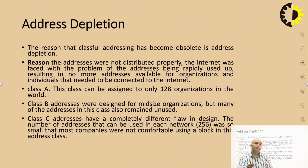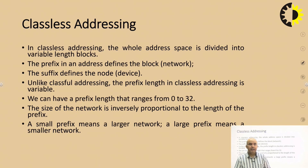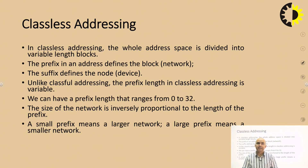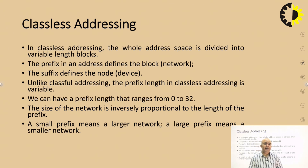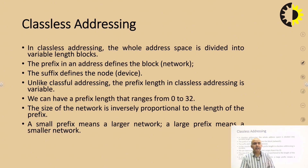We move from classful to classless addressing. In classless addressing, the whole address space is divided into variable-length blocks. Unlike classful, where fixed lengths are used, here variable lengths are used. The prefix defines the block, which signifies the network ID, and the suffix defines the nodes connected to the internet. The variable prefix length can range from 0 to 32, and this variable prefix is called a mask.